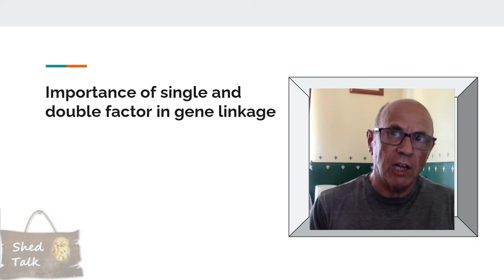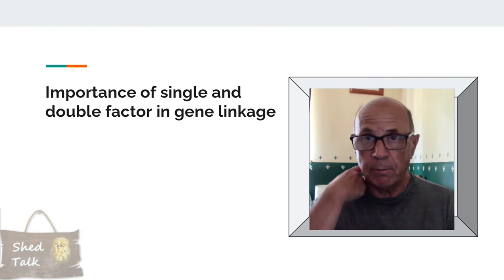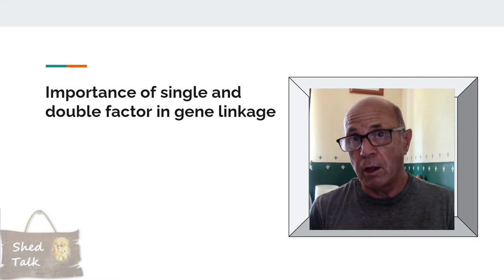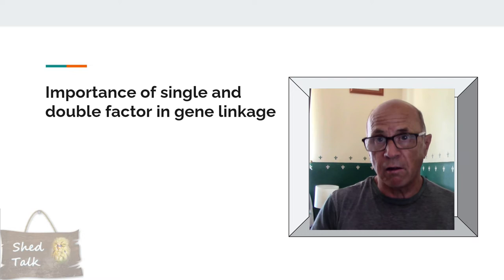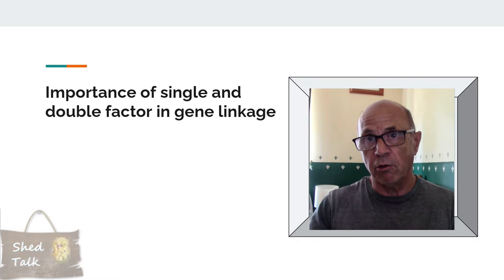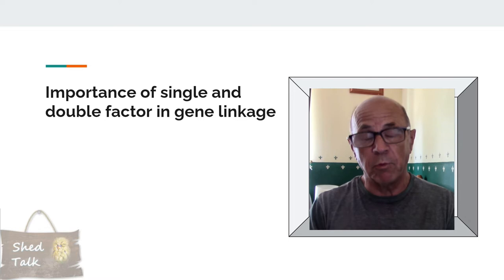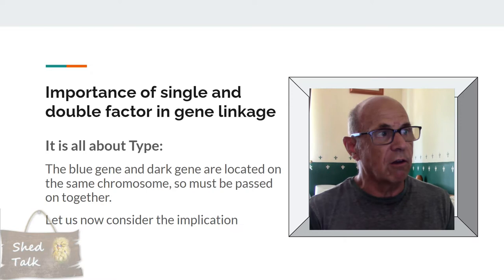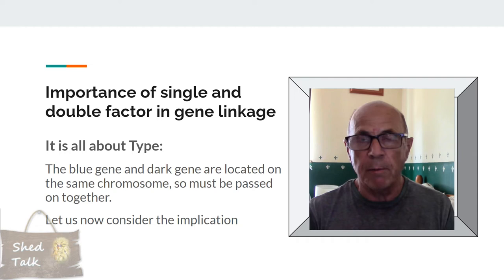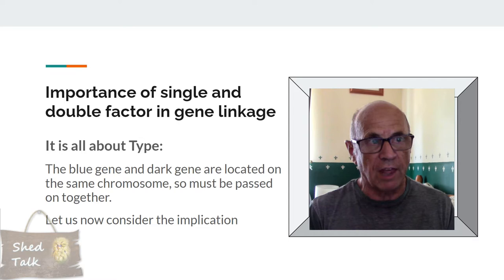This becomes really interesting when we consider that genes are linked. For example, a wild type blue gene producing a green bird, but a mutated dark factor gene — those two will both sit on the same chromosome and must be passed on together. So the wild type green gene and the dark gene cannot be separated. The blue gene and dark gene are both located on the same chromosome and must be passed on together, and we'll consider the implications of that by looking at a number of pairings using the Punnett square.